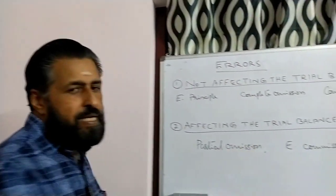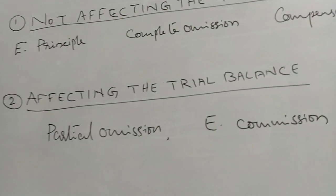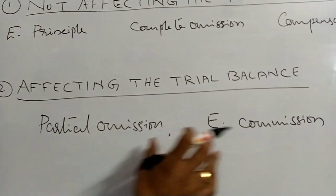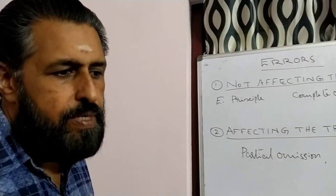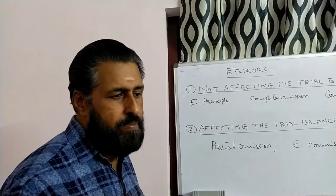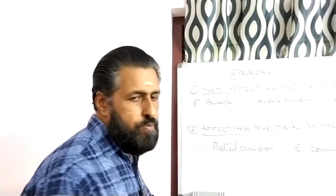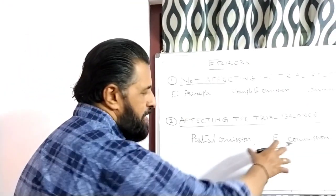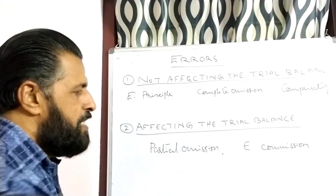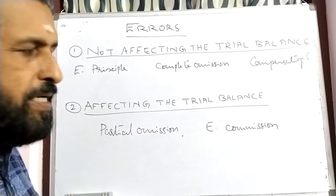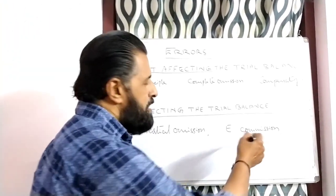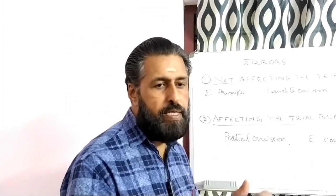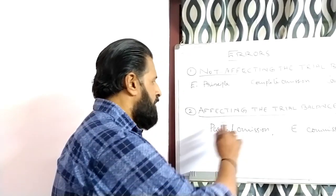Errors that affect the agreement of the trial balance include partial omission and errors of commission. In partial omission, only one side — debit or credit — is recorded, causing a difference. In errors of commission, wrong posting, casting, or balancing creates an imbalance in the debit and credit totals, affecting the trial balance.